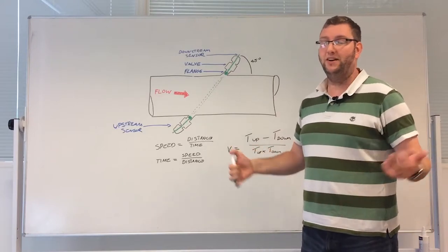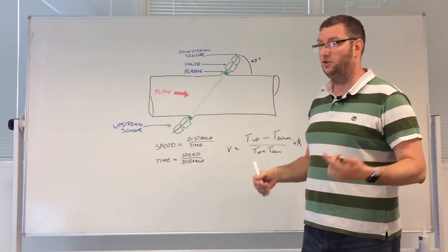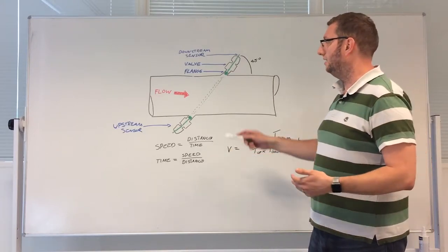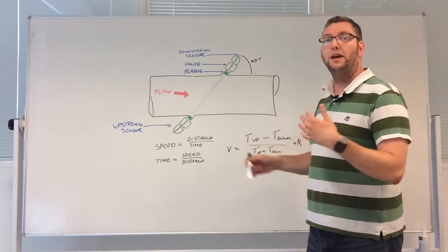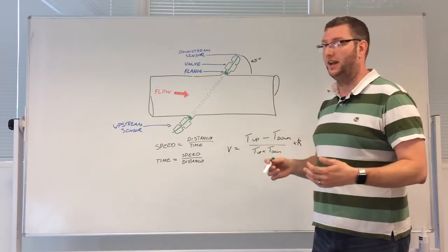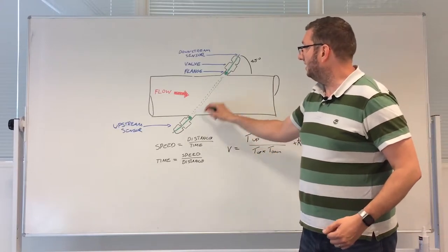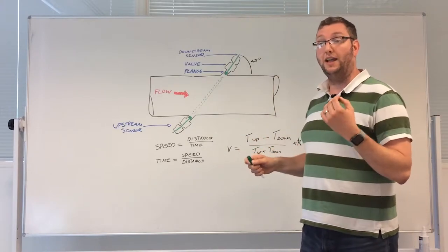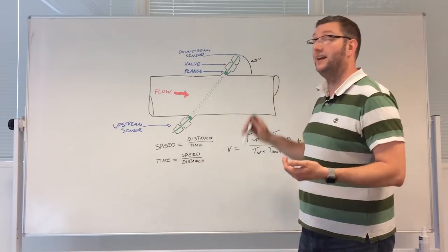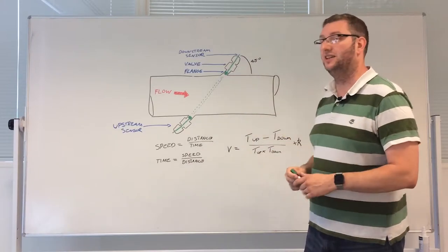This pipe could contain various different gases: hydrocarbons, hydrogen, carbon dioxide, anything, but we'll know that so we'll be able to calculate the velocity of sound in that particular gas mix. So by using these sensors and a really accurate computer, we can measure that time of flight, how long it takes the signals to go.